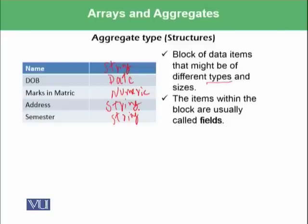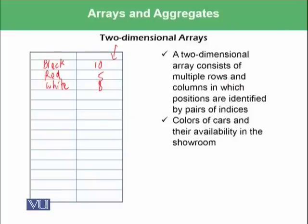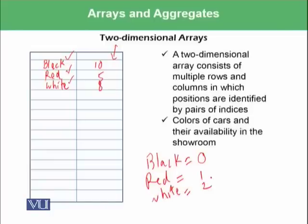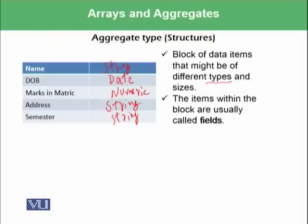Please note that in the two-dimensional array on the previous slide, we had the same data type. Black, red, and white are not string variables; they are actually integer variables. Black is denoted by 0, red is denoted by 1, and white is denoted by 2. So you write the numbers 0, 1, 2 — this column will be integer and this column will be integer. Both columns must carry the same data type. However, in an aggregate, different variables or data elements can be of different types. Such items within the block are usually called fields.